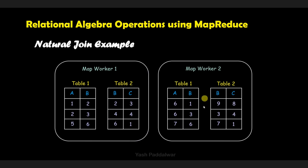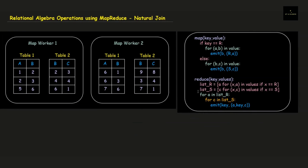If you haven't understood the algorithm, don't worry — we will look at a particular example and solve it step by step with the help of that algorithm, and by the end of this video we will be clear on all the concepts. In the first Map Worker, attribute B is common in both tables. Similarly for Map Worker 2. Looking at the first record of both tables, the value under attribute B is common between them, which is 2. So we can join these two records with respect to that common value. This is called natural join.